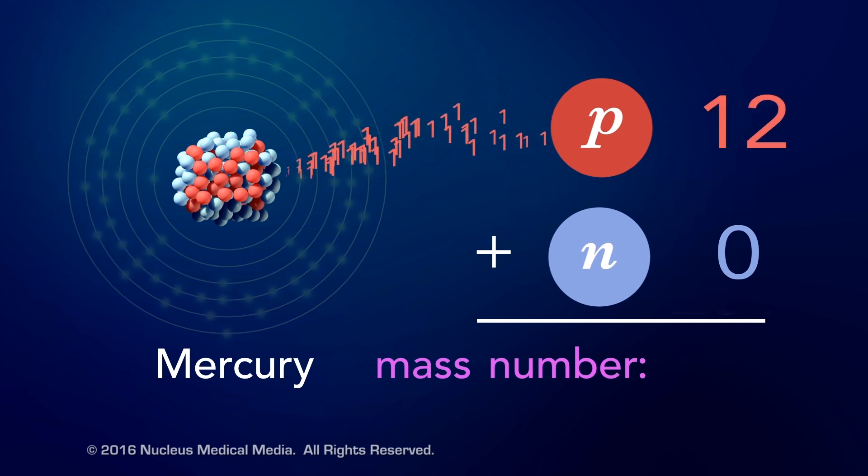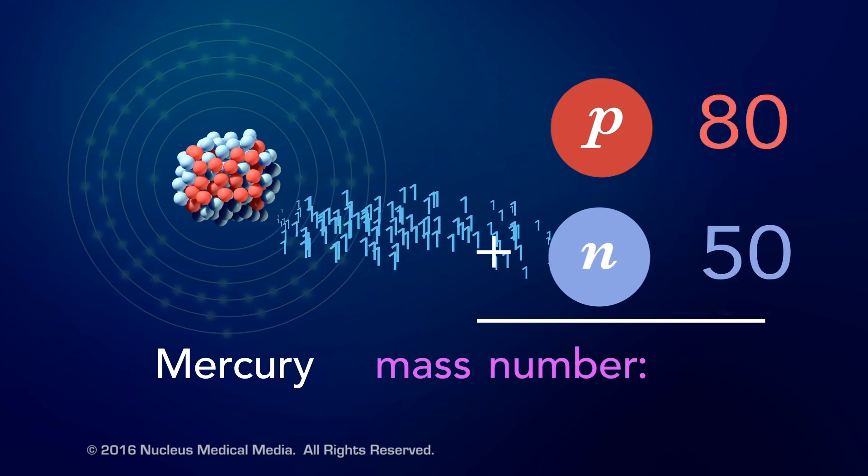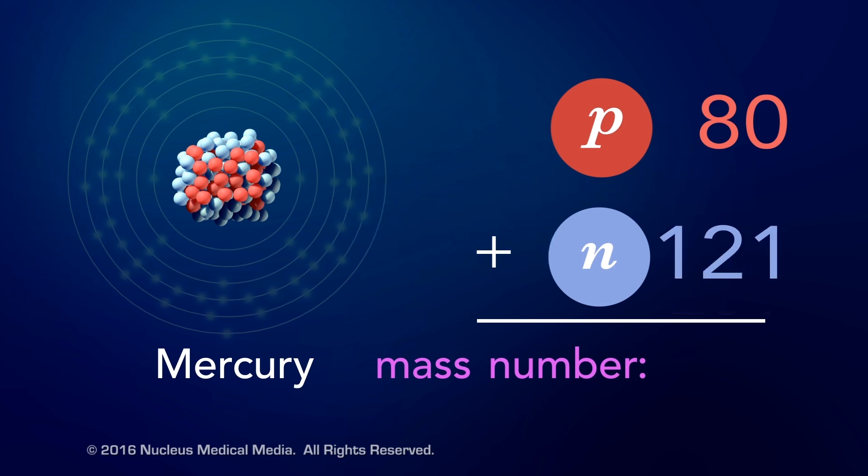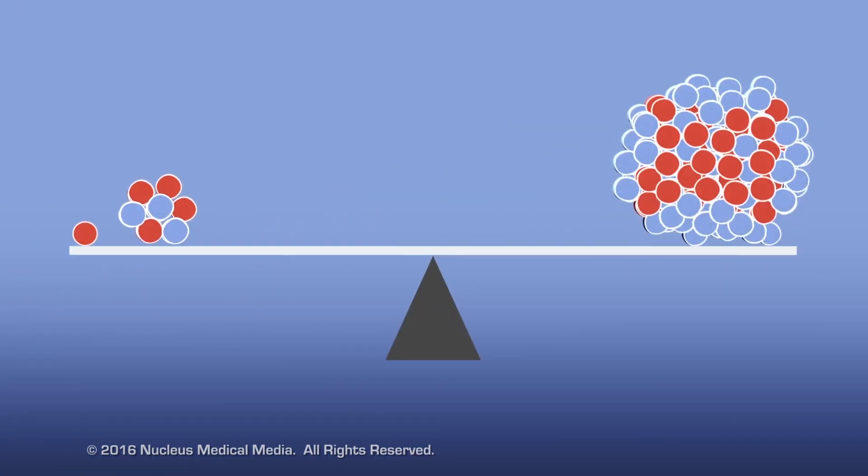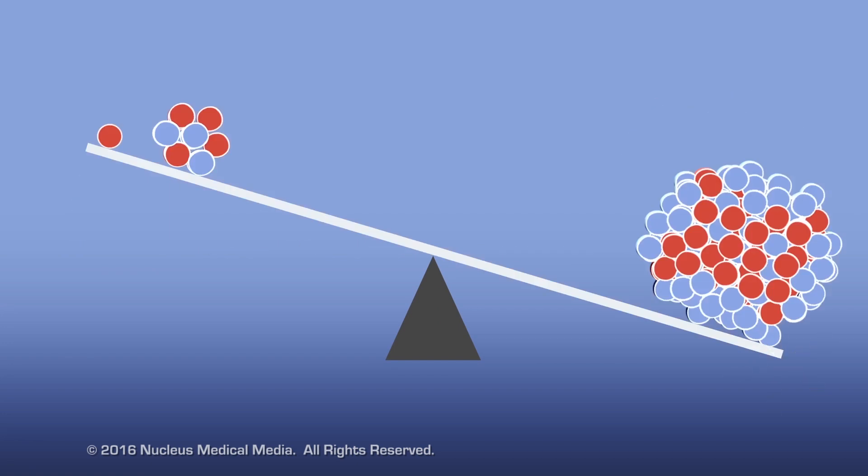And the mass number of this mercury atom, with 80 protons and 121 neutrons, is 201. Needless to say, mercury is a much heavier element than hydrogen or carbon.